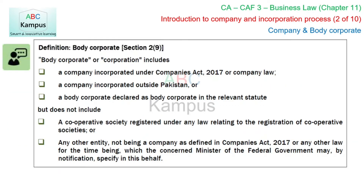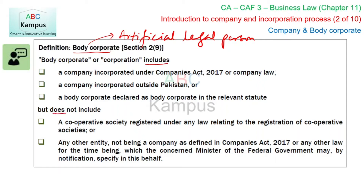دوسری definition ہے body corporate۔ Law میں بعض وقت کچھ definitions literal meaning پر نہیں ہوتیں — وہ inclusive یا exclusive definitions ہوتی ہیں، جو بتاتی ہیں کہ اس میں کیا کیا شامل ہوگا اور کیا کیا شامل نہیں ہوگا۔ یہ definition خود body corporate کو explain نہیں کر رہی۔ Body corporate کا لفظی مطلب ہے artificial legal person۔